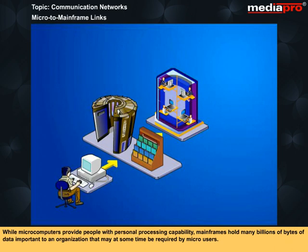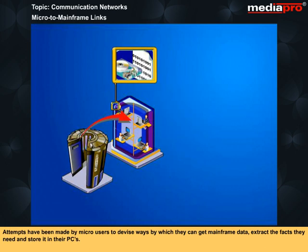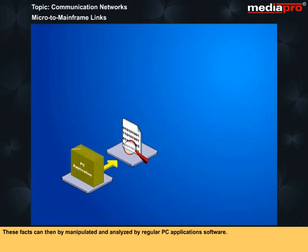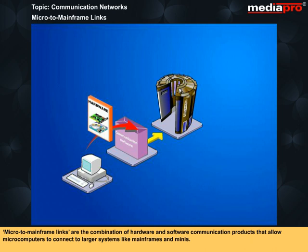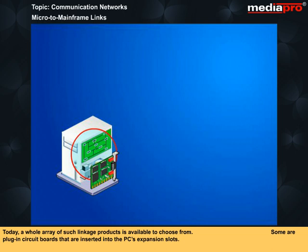While microcomputers provide people with personal processing capability, mainframes hold many billions of bytes of data important to an organization that may at some time be required by micro-users. Attempts have been made by micro-users to devise ways to get mainframe data, extract the facts they need, and store it in their PCs. These facts can then be manipulated and analyzed by regular PC application software. Micro-to-mainframe links are the combination of hardware and software communication products that allow microcomputers to connect to larger systems like mainframes and minis. Today, a whole array of such linkage products is available.